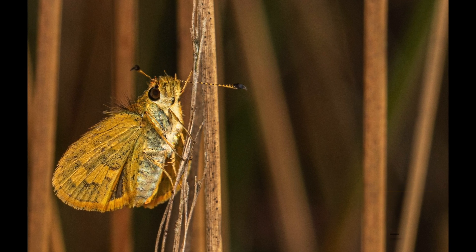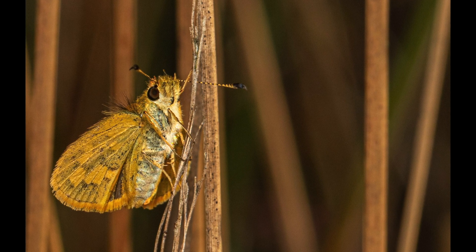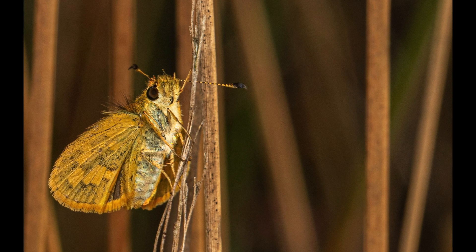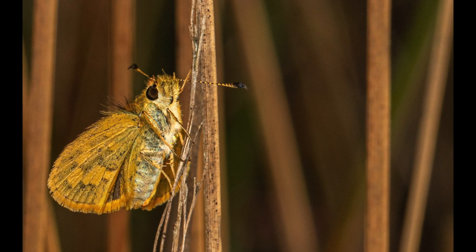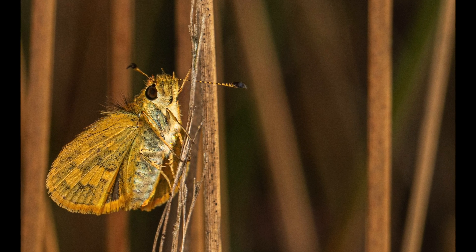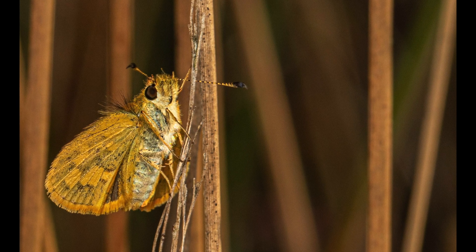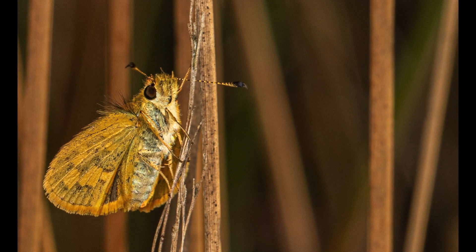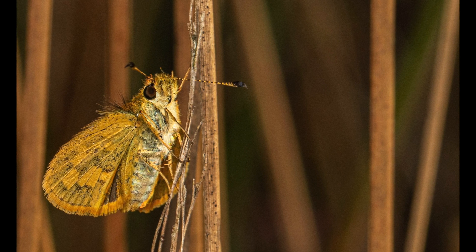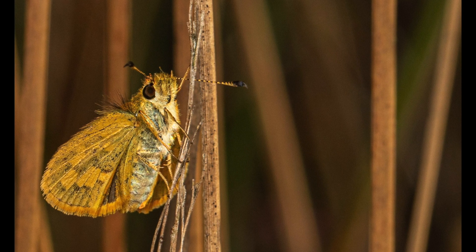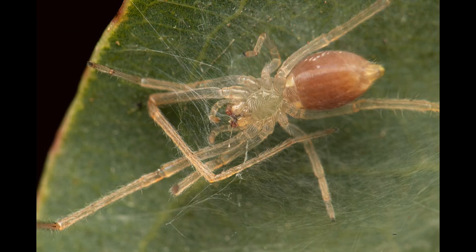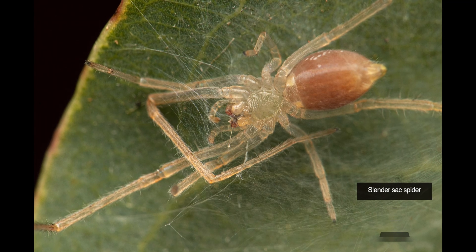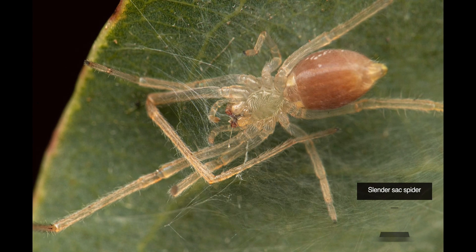The next portrait is of a skipper butterfly. I spotted this green grass dart on a dried reed at the wetlands. They are quite skittish but I got lucky this time. They are diurnal and are named for their quick darting flight habits. I really like the golden color of the hairs and scales that cover their body and wings.